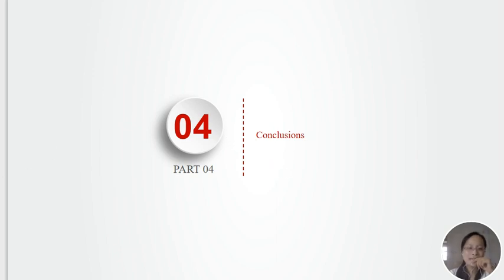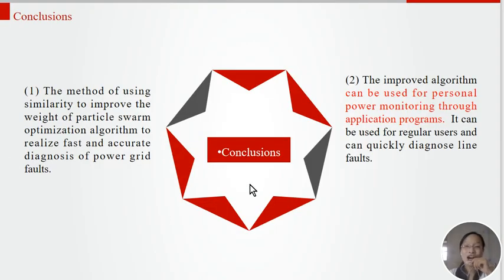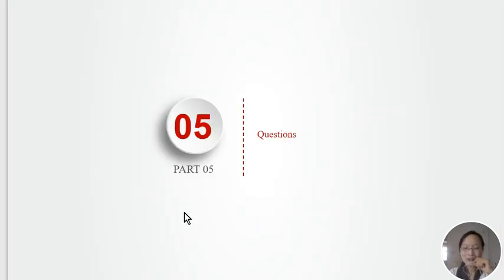Part 4: Conclusions. The method of using similarity to improve the weight of particle swarm optimization algorithm realizes fast and accurate diagnosis of power grid faults. The improved algorithm can be used for personal power monitoring through application programs. It can be used for regular users and can quickly diagnose line faults.